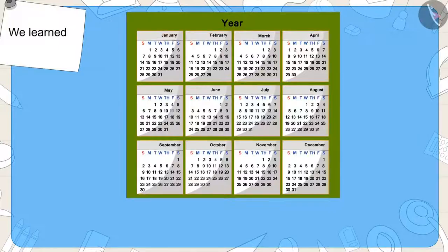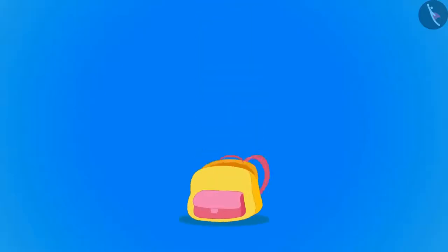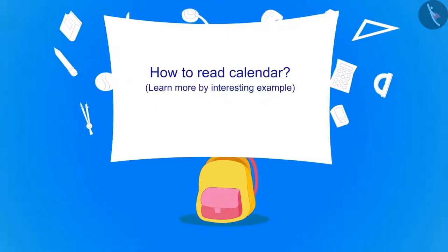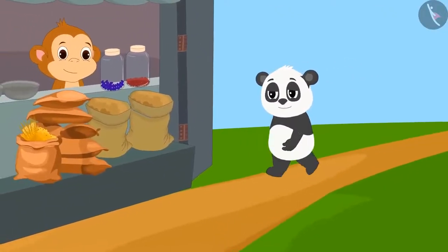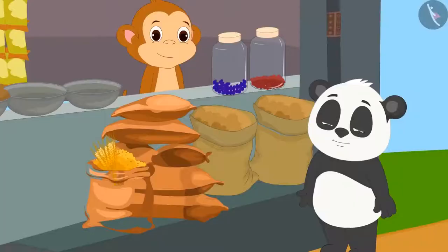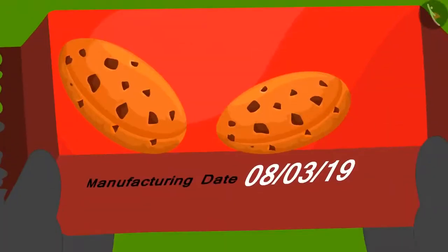In the previous video, we learned about the calendar. In this video, we will learn more about this. Golu has come to a marketplace to buy biscuits today. When he bought a pack of biscuits from the shopkeeper, he saw that some numbers were written on it.